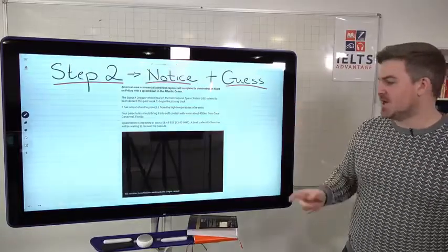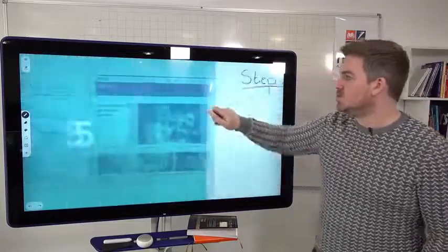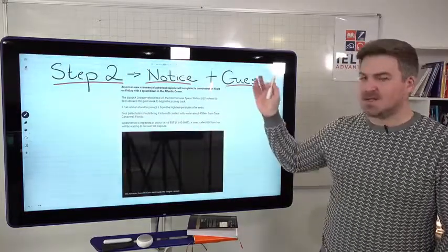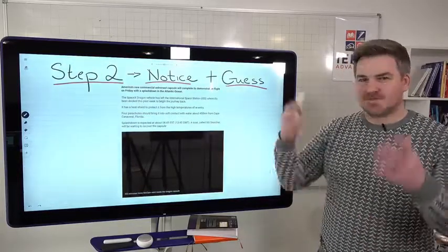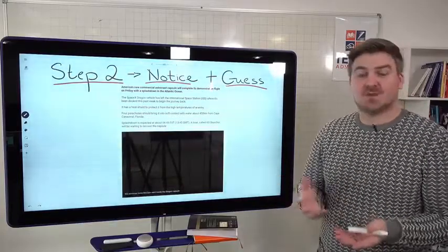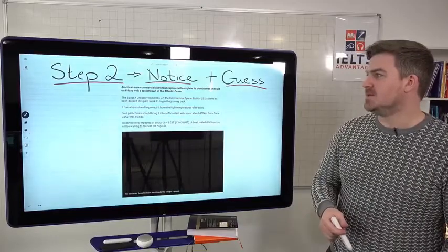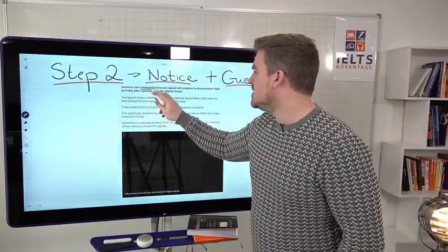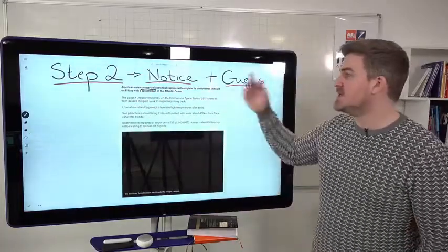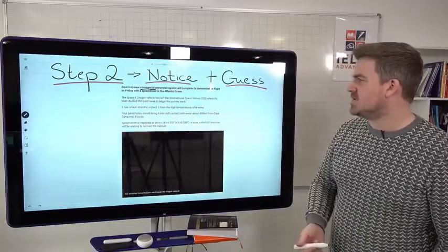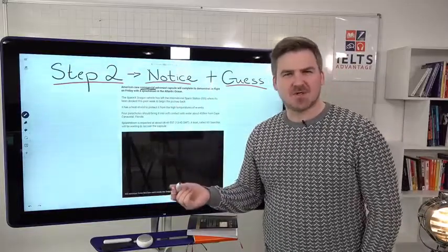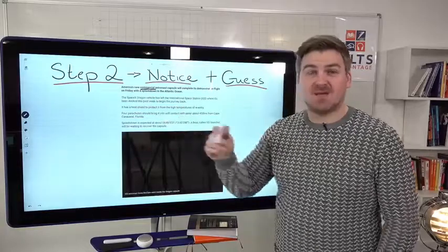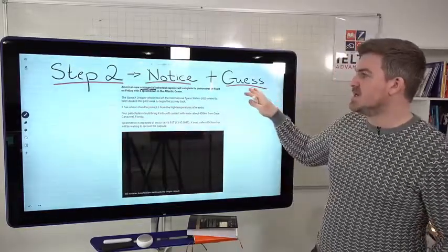So step two, notice and guess. Let's say you clicked on technology. I clicked on here and I found this article about SpaceX sending their capsule up to the International Space Station, so it's about space exploration, which is actually a topic that comes up quite a bit on task two. When I'm reading and I'm trying to improve my vocabulary, what I'm doing is I'm noticing any new words or words that seem a little bit strange that I don't quite understand. Imagine I'm reading this and I see commercial astronaut, America's new commercial astronaut capsule. That seems a little bit strange, commercial, like a TV commercial. Why are they talking about a TV commercial when it comes to that? Or maybe it's something different. So what I would do is I would first underline it, or if you're listening, you could just note it down.